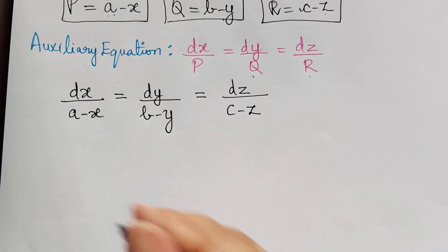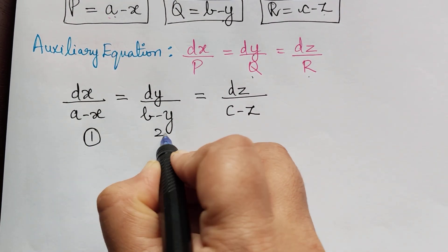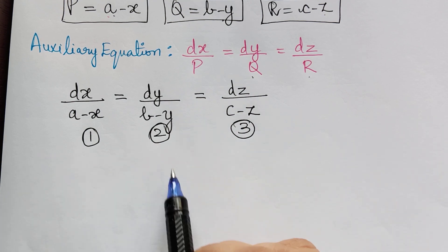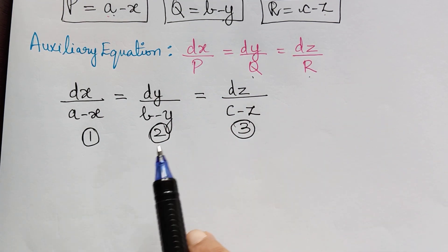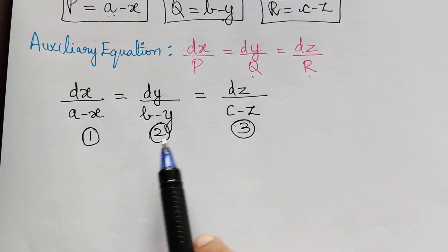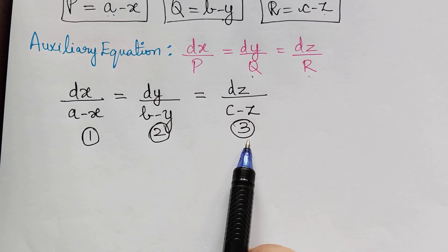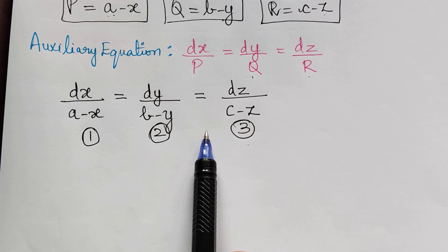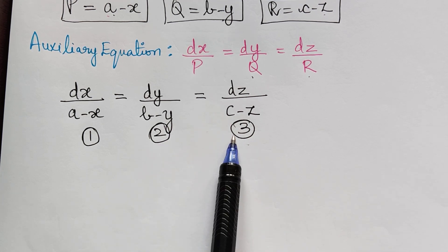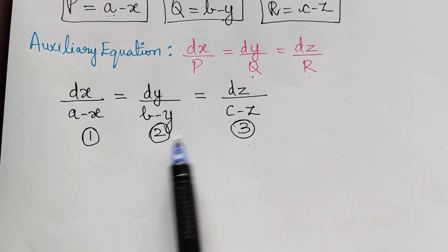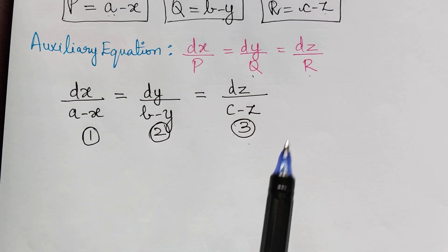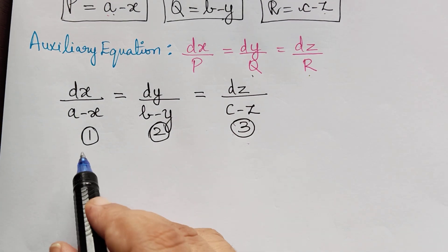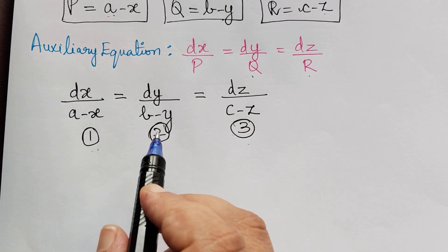So we have obtained the auxiliary equations. Let us take them as 1, 2, and 3. Now let us compare these equations and get the solution phi of u, v equal to 0. If you go through problems 1, 2, and 3 which I have done previously in this topic, you will understand this lecture better. We will compare first equations 1 and 2.